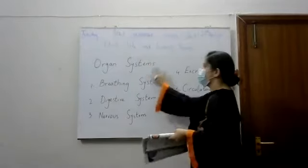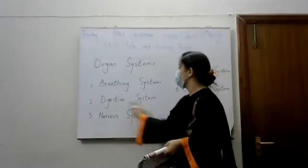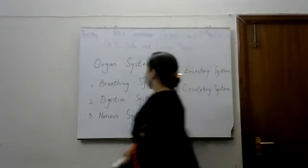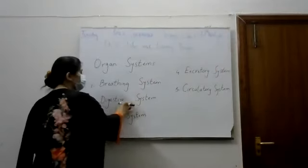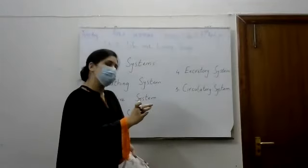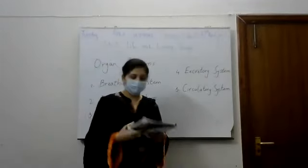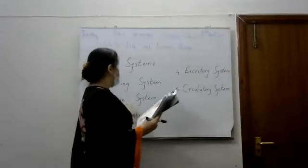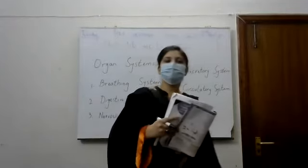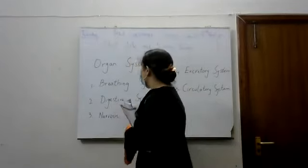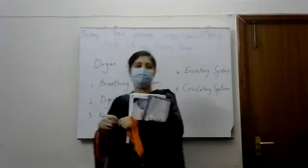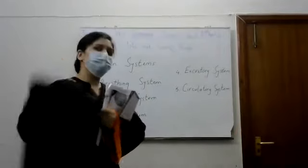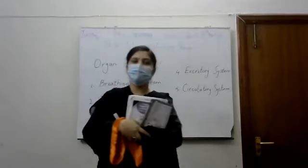These are the five systems: digestive system, nervous system, excretory system, breathing system, and circulatory system. The digestive system means you take the food from the mouth to the stomach and then it goes into the blood. What is the function of the digestive system? When we eat food from the mouth, it transfers to the stomach and then it is absorbed by the blood.